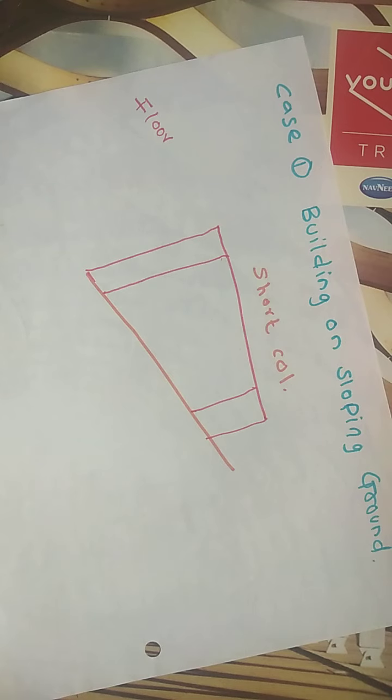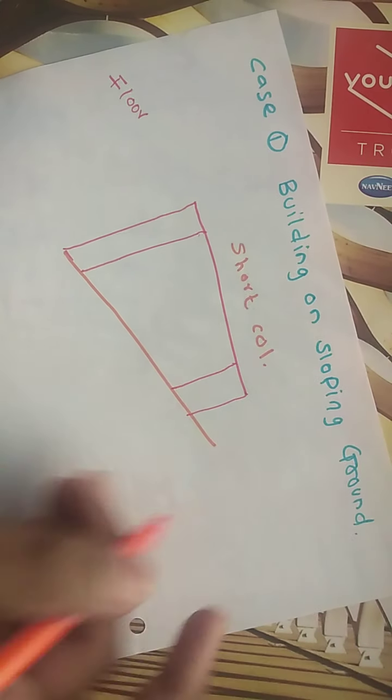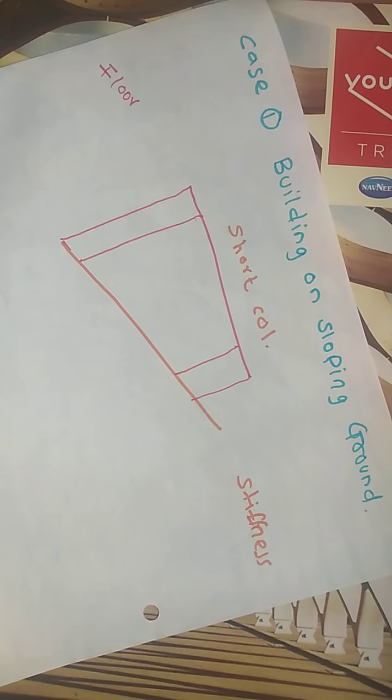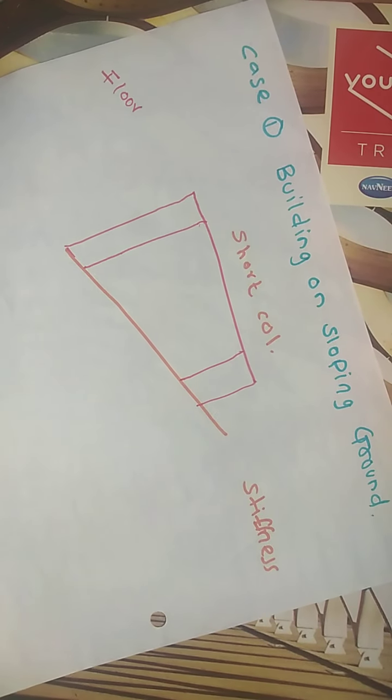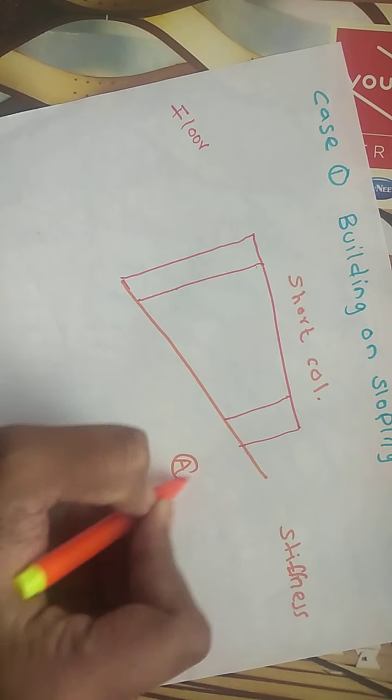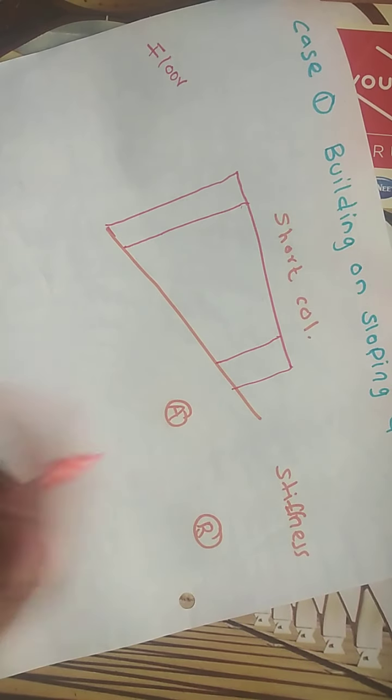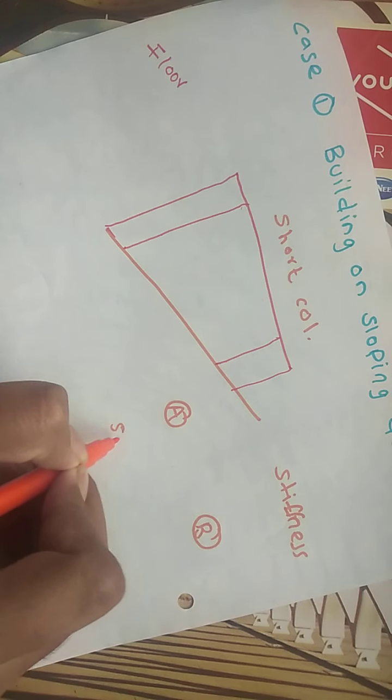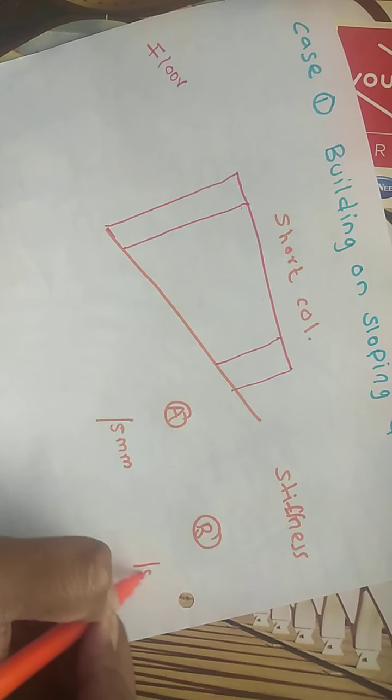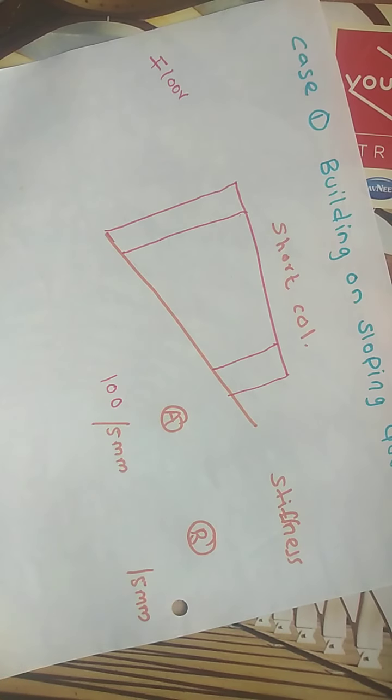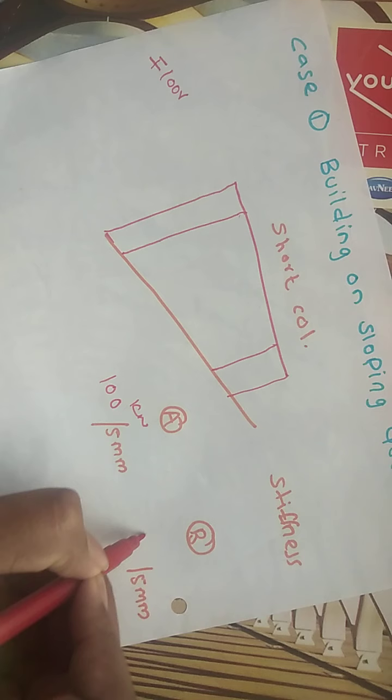This condition arises because of sloping ground. Here the vital role is played by the property called stiffness. First I would like to tell you about the stiffness. Suppose there are two bodies A and B and you want to displace both bodies by 5 mm. Then the force required plays a vital role here. Suppose this requires 100 kilonewton force and this requires 50 kilonewton force.